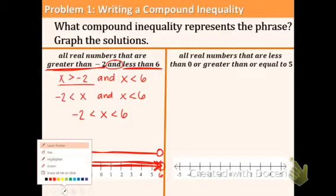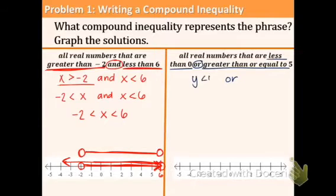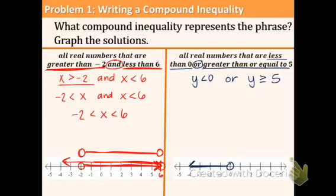Moving on to part B: all real numbers that are less than zero OR greater than or equal to five. We're using the OR word this time. Using Y: Y is less than zero OR Y is greater than or equal to five. With an OR inequality they don't overlap, so we just graph. Y is less than zero goes left, Y is greater than or equal to five has a closed circle shading to the right. That completes this example.